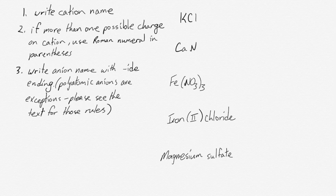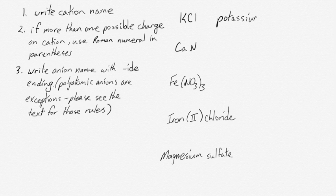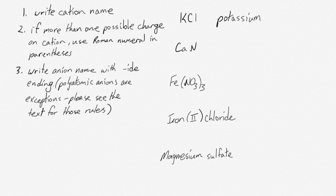So we'll do a couple of examples here. We'll start with KCl. This is the potassium ion associated with the chloride ion. So potassium is one of those group one metals that only has one possible charge so we can ignore rule number two right now. So we just write potassium. The chlorine ion is called chloride. So we write potassium chloride.